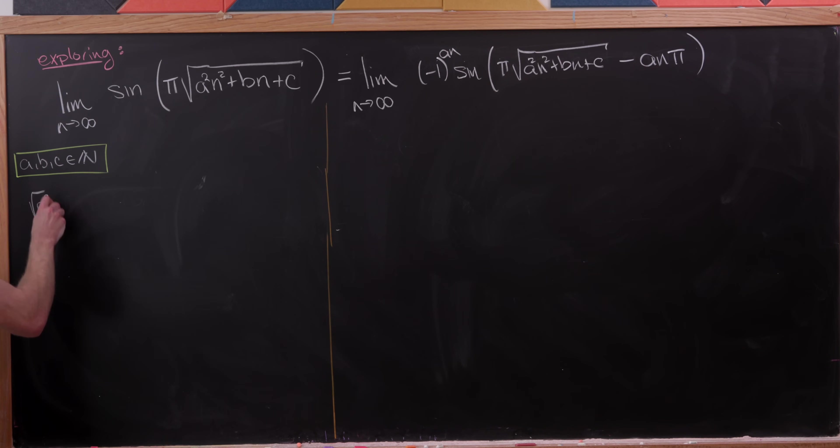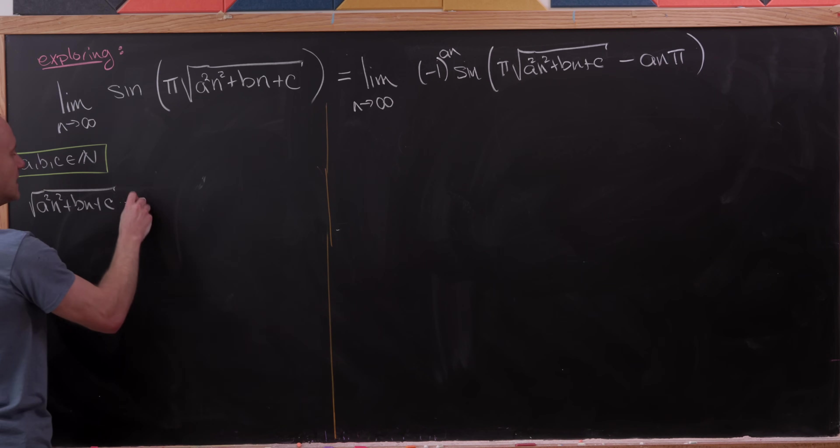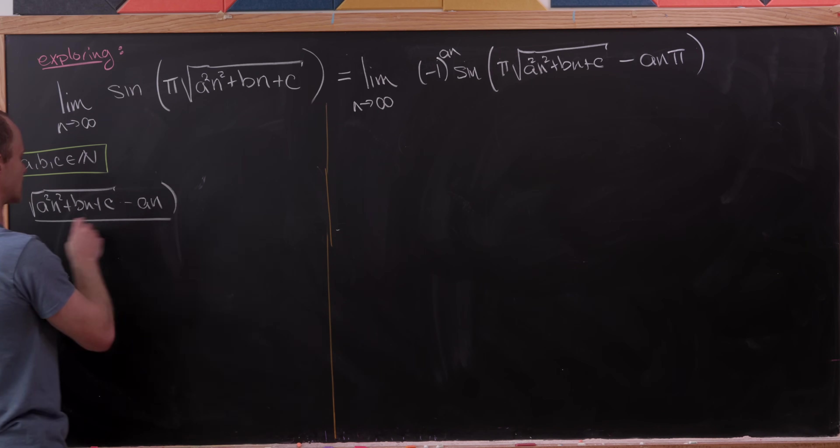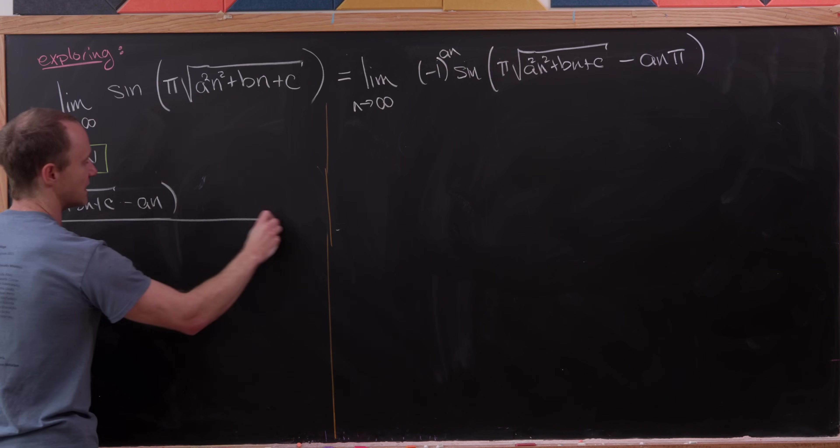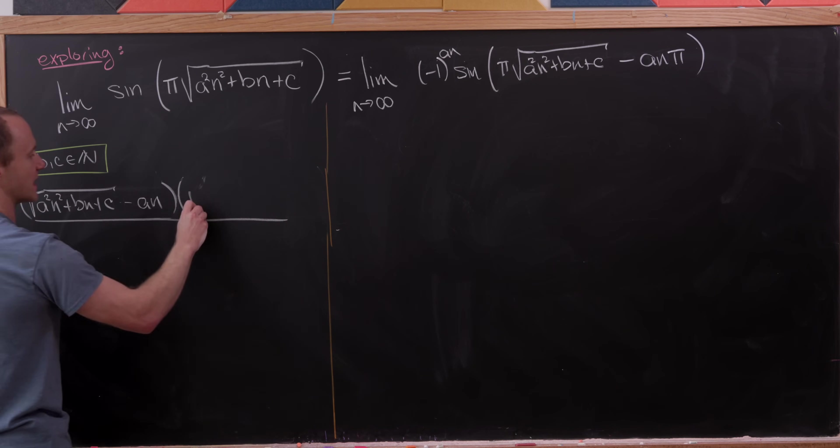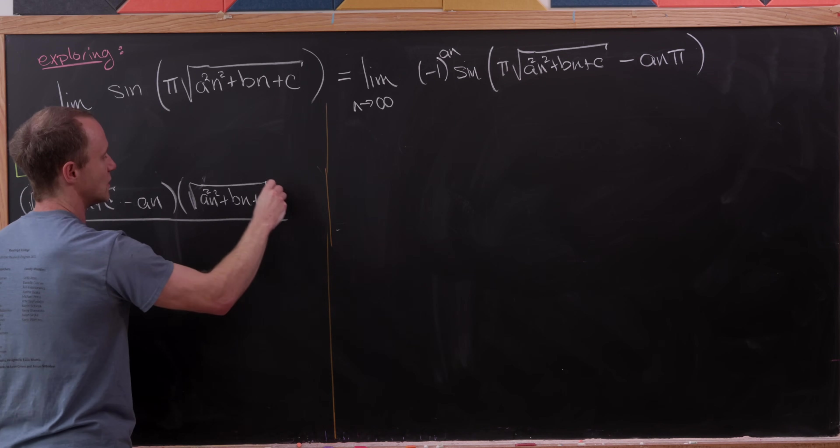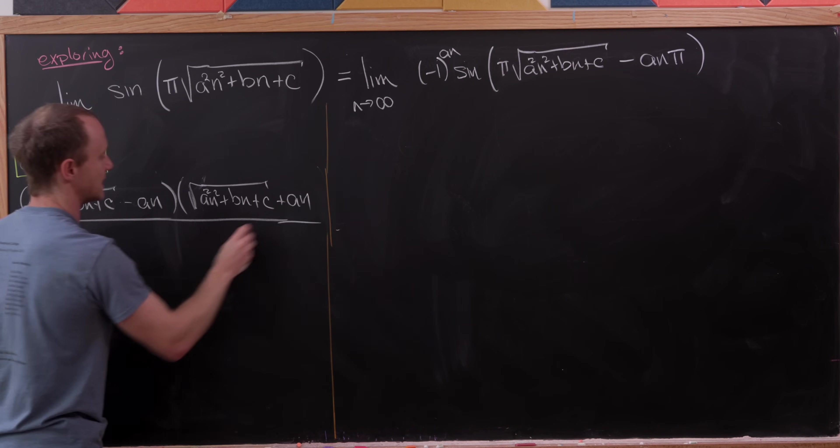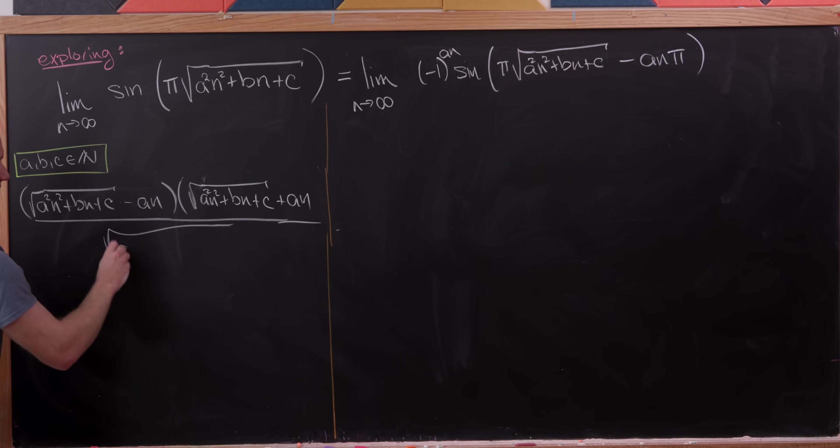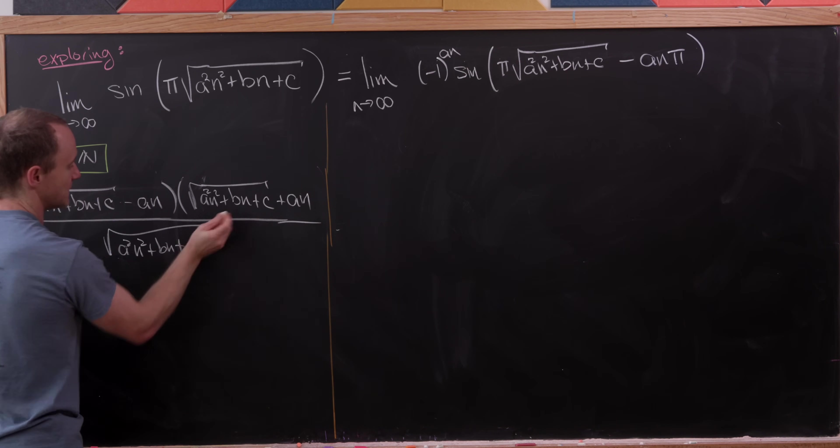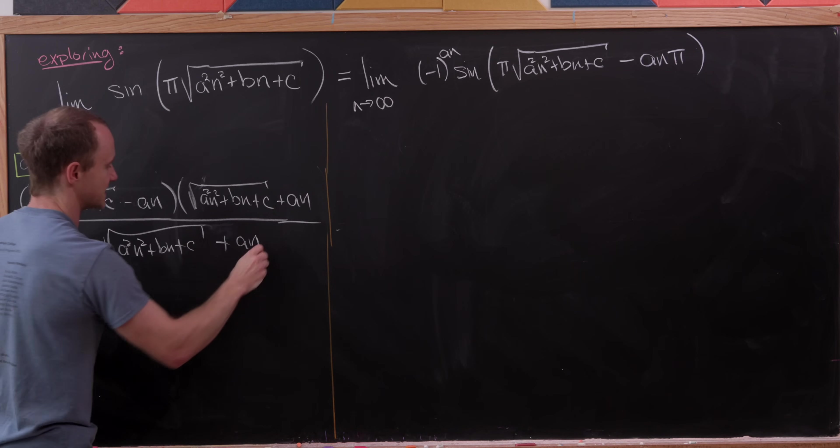I'm going to bring that over here. So I'll have the square root of a²n² plus bn plus c, and then minus an. The standard trick here is to rationalize. We can rationalize by taking the numerator and denominator and multiplying by something that looks very similar, except with a plus instead of a minus between these two terms. So we've got √(a²n² + bn + c) and then plus an.